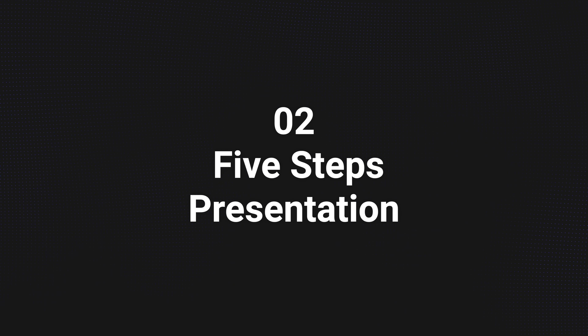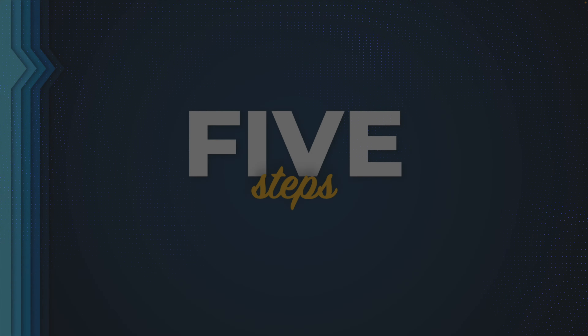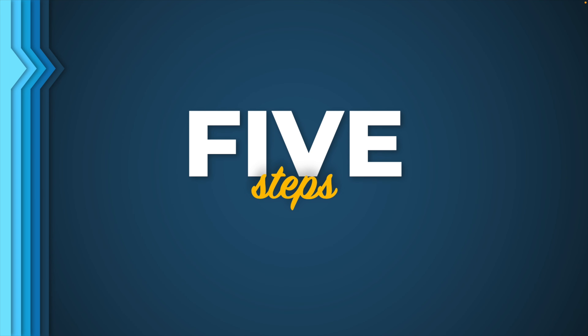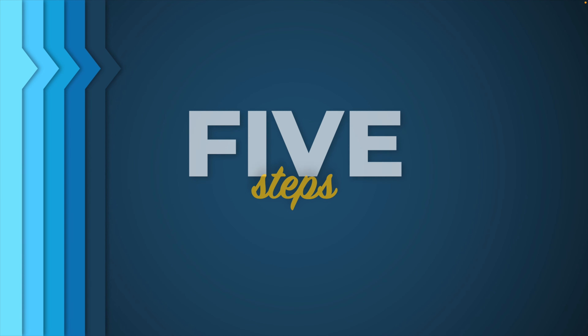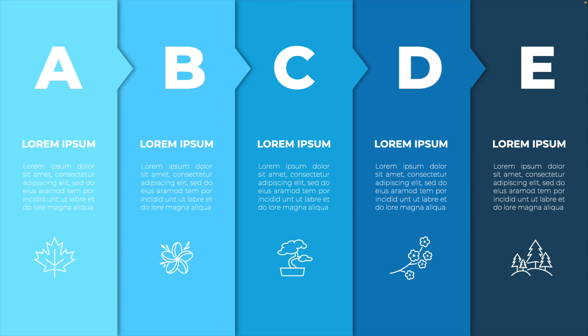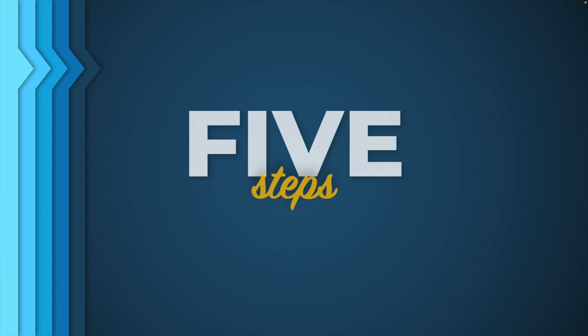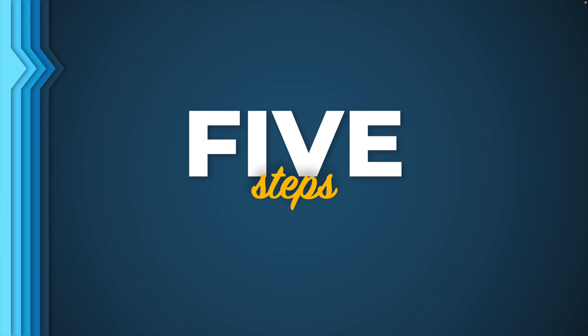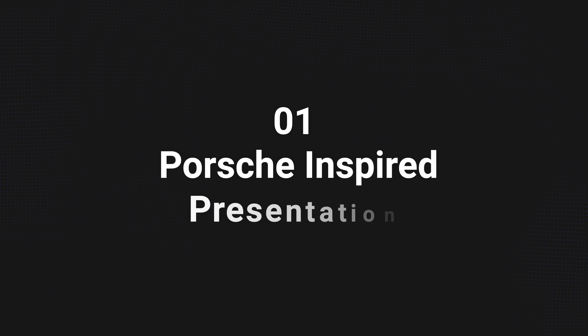Moving on to number 2, this is a five steps presentation — a variant of the purple one we've seen before but with a different outcome. When you click, the morph transition creates five, or any number of, equal columns on the slide where you can add your own content and customize as you like. It's a cool reveal effect that I really like and it can be a great addition to your presentation.